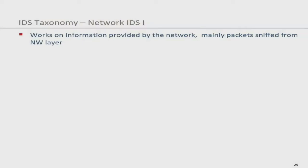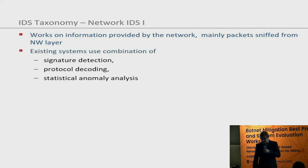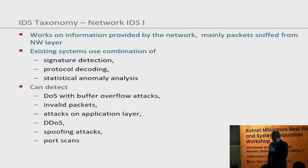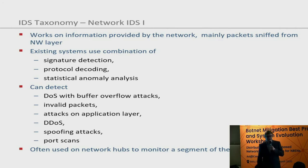Network IDS work on information provided by the network. They mainly sniff packets on the network layer, using a combination of signature detection, protocol decoding, and statistical anomaly analysis. They can detect denial of service attacks, invalid packets, application layer attacks, DDoS attacks, spoofing attacks, and port scans. They are often used on network hubs to monitor a segment of the network — for example, at a central uplink to the internet.